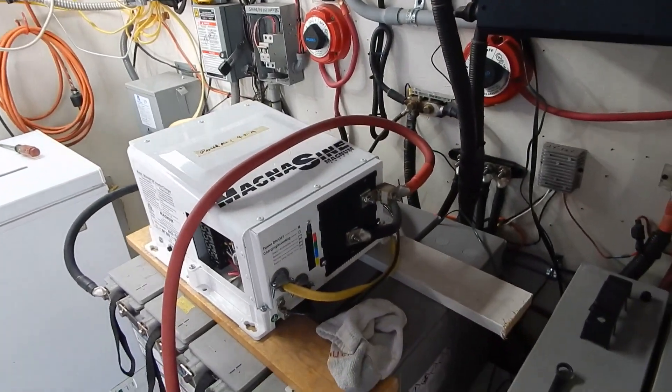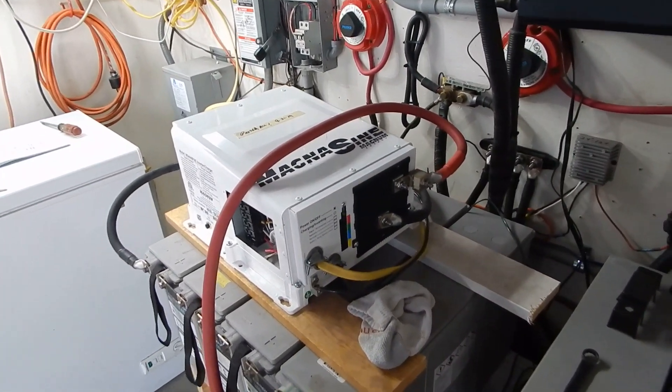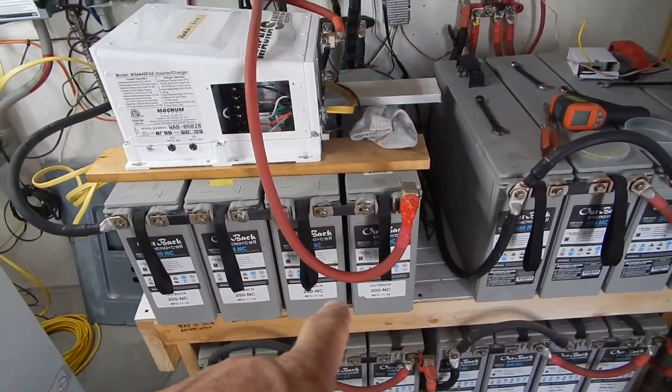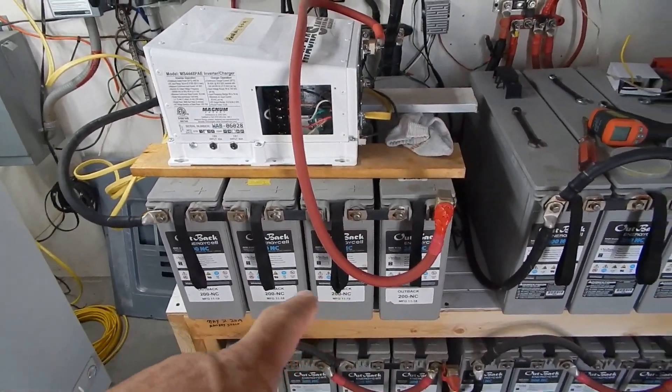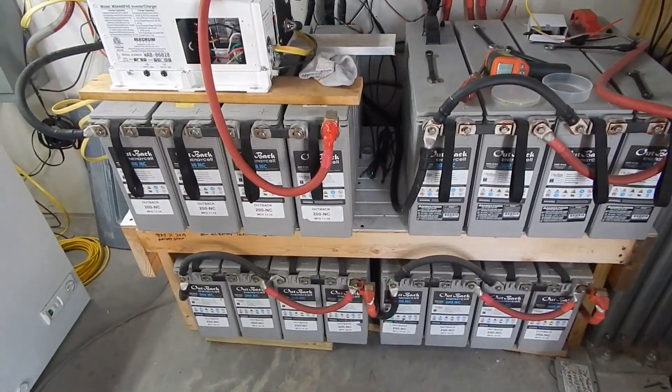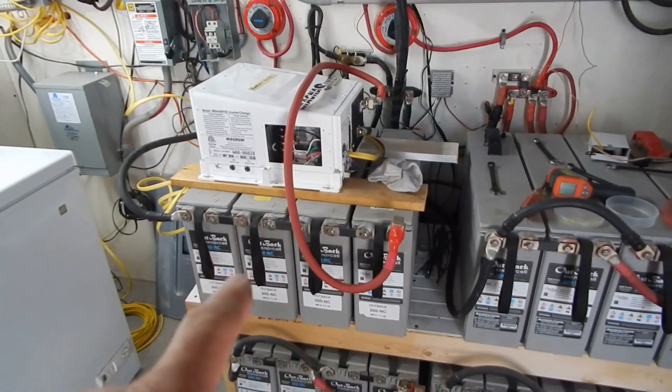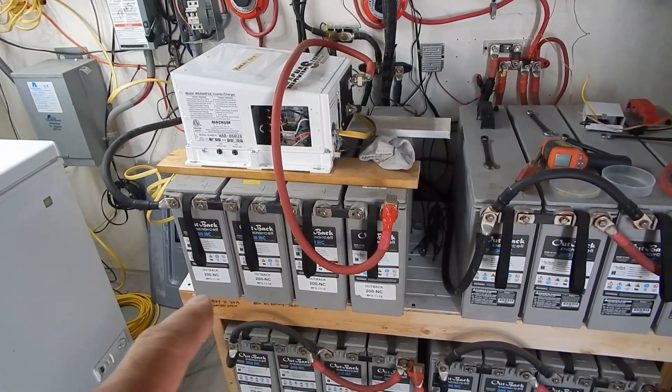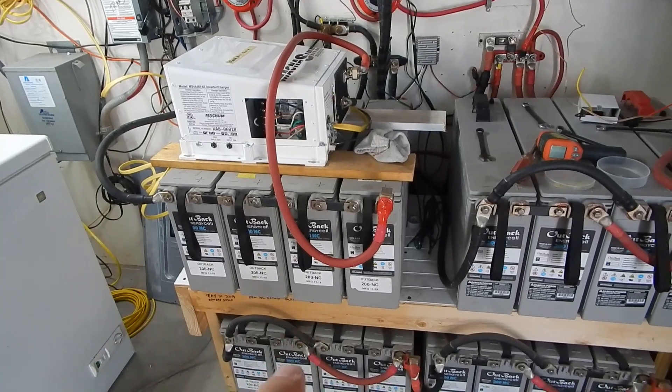So now I'm going to disconnect it. I have this bank here hooked up, 48 volts. It's isolated from everything else and all my other batteries are still hooked up at 24. So I'm going to shut this down, disconnect it, take the bus bars out, hook it back up to 24 volts.